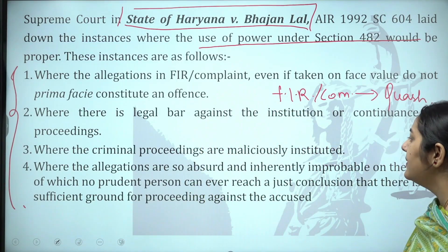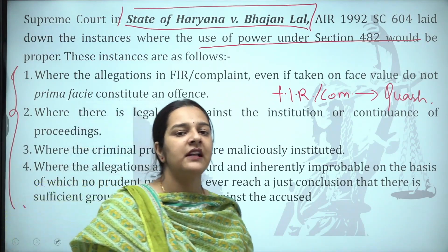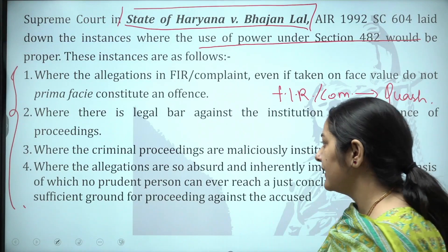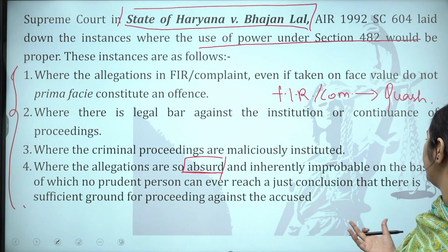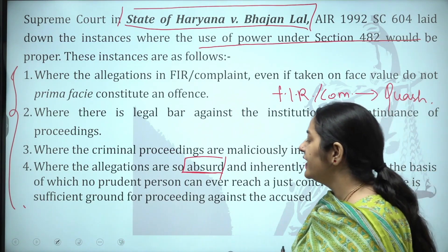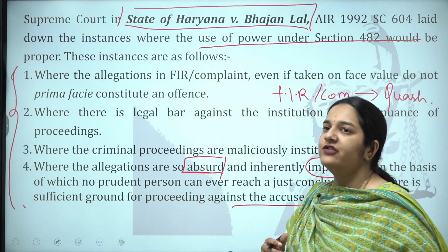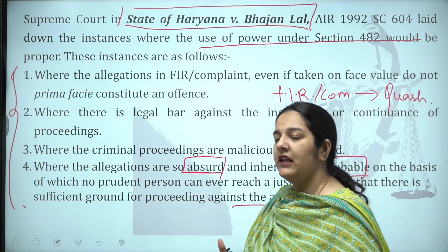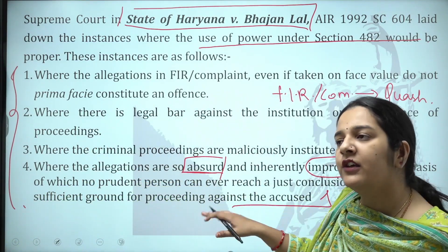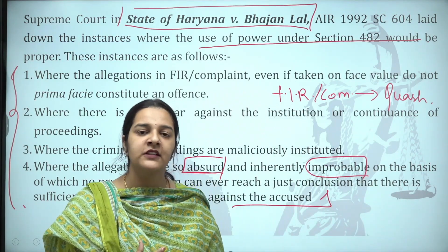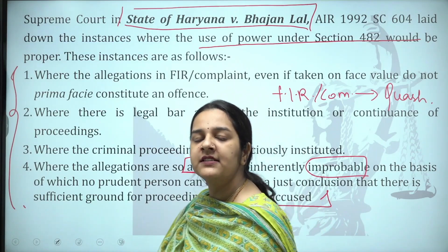The third circumstance from Bhajan Lal is where the criminal proceedings are maliciously instituted — that is, instituted with wrong intentions to harm the accused. The High Court can exercise its inherent power in such cases. The fourth circumstance is where the allegations are so absurd and inherently improbable that no prudent person could reach a just conclusion that there is sufficient ground for proceeding against the accused. Such allegations can only defame and harass the accused. The High Court can exercise its inherent power and quash the FIR or complaint.